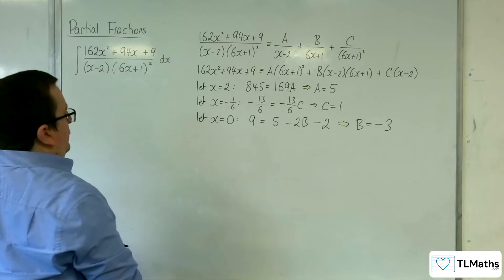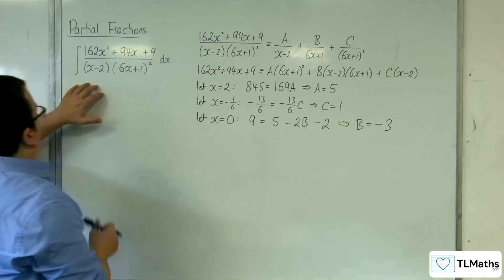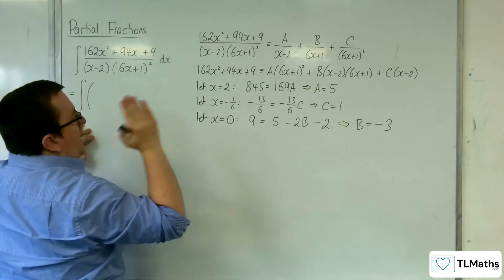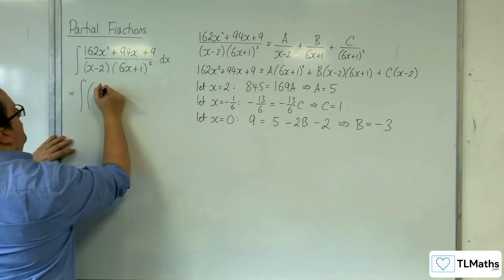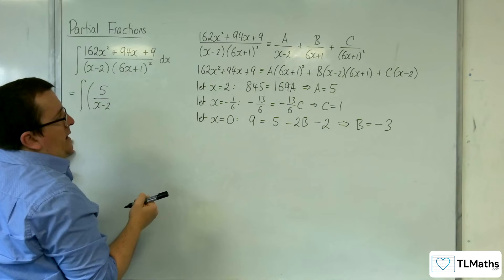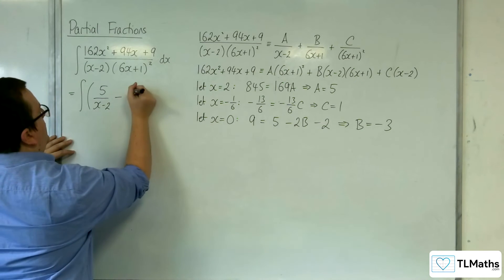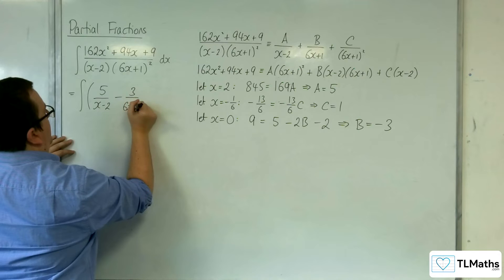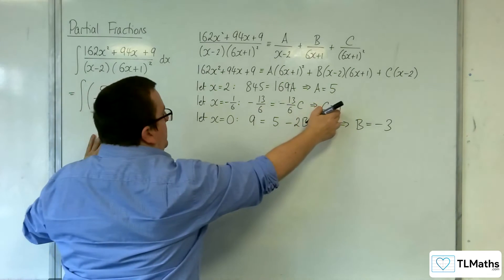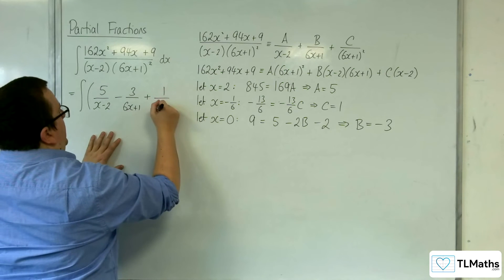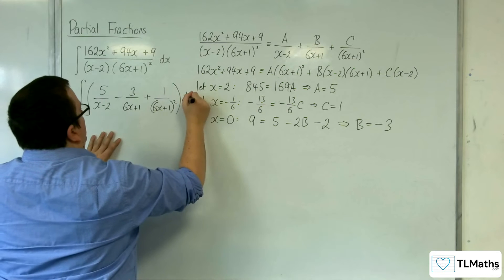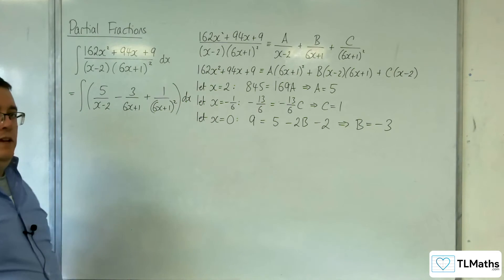So our integral is the integral of 5 over (x − 2) plus (−3) over (6x + 1) plus 1 over (6x + 1) squared, all dx. This is what we want to integrate.